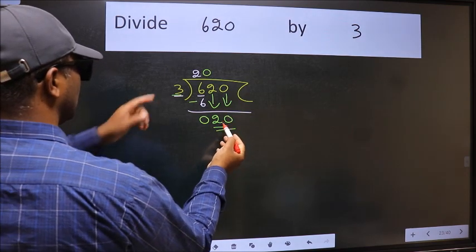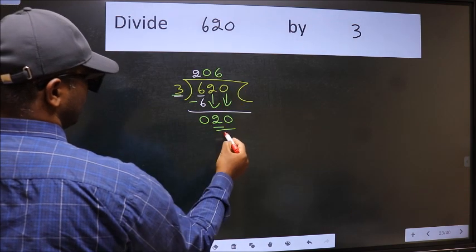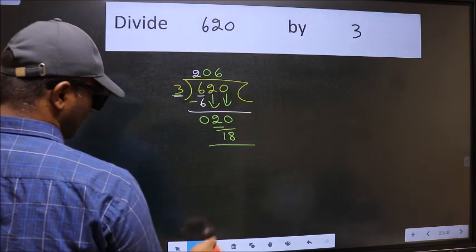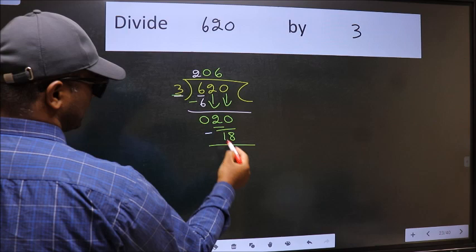A number close to 20 in the 3 table is 3, 6, 18. Now, we should subtract. We get 2.